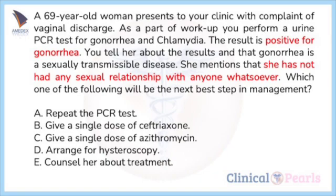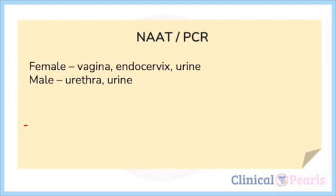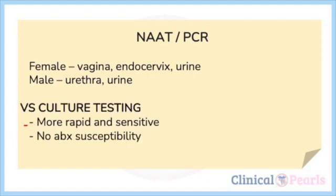Currently, a nucleic acid amplification test (NAAT) such as PCR is recommended as the optimal method for the diagnosis of genital tract infections caused by Neisseria gonorrhoeae and Chlamydia trachomatis. Samples for NAATs can be collected from vagina or endocervix, urine for both male and female, or urethra for men only. Compared with culture, commercially available NAATs offer rapid results and are generally more sensitive. The main drawback of NAAT is that no antibiotic susceptibility is provided. Cultures are only recommended when drug resistance is suspected. In situations where positive test results are not supported by sexual history or clinical findings, retesting the patient with a different NAAT or culture is recommended.